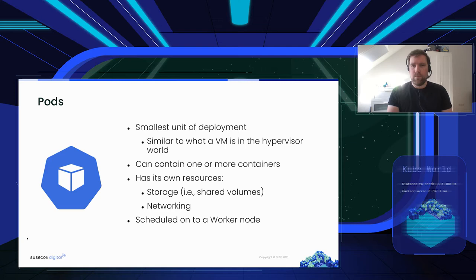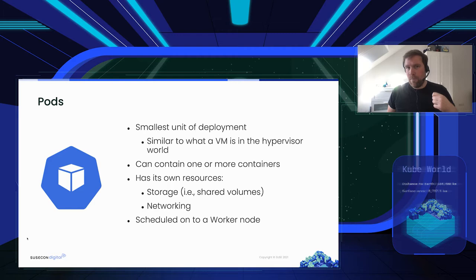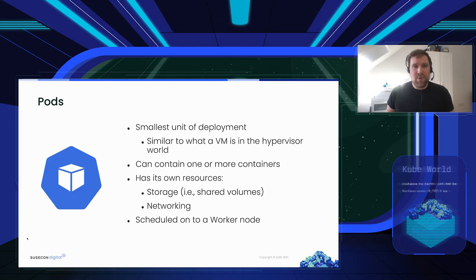A Pod represents one instance of your application. The reason you might have more than one container per Pod is that it's good practice to run only one process per container. For one application instance you may need more than one process — for example, a language runtime and a web server, or your application binary and a monitoring daemon that should always be scheduled together. So you'd have one Pod with two containers.